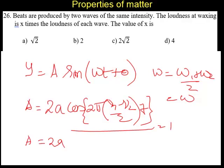Here A is the amplitude of the original wave. If the beat amplitude is 2A, we need to find the intensity. Intensity is proportional to square of the amplitude. So intensity in this case is 4A². The beats are producing loudness x times the loudness of each wave.